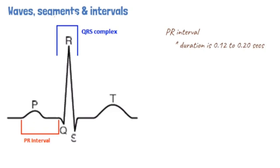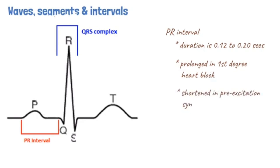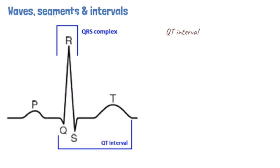The PR interval is prolonged in the presence of first-degree heart block and is usually short in the presence of certain pre-excitation syndromes. The QT interval commences at the start of the QRS complex and ends at the end of the T wave. It represents the duration of time taken for the ventricles to depolarize and repolarize. The normal QT interval is less than 440 ms and tends to be longer in women.